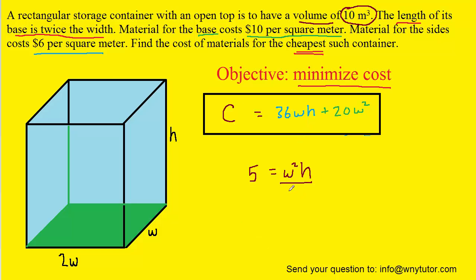So we can solve this for h by dividing both sides by w squared. And so we now have an expression for h that we can plug in to our objective equation. We can simplify this equation by canceling a w in the numerator and the denominator, and by multiplying 36 by 5.